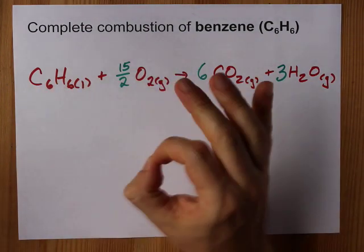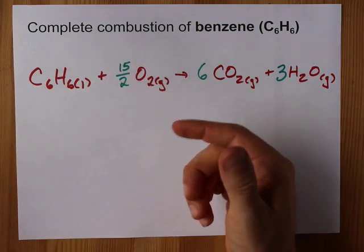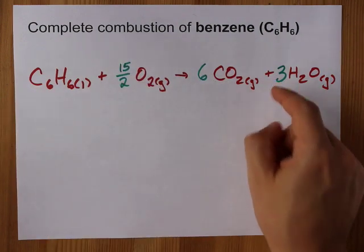This is technically balanced. 1, 15 over 2, or 7.5, 6, and 3.